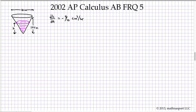We have here a related rates free response question. In fact, all three sections of this problem are related rates, and to my knowledge this is the only such free response question the College Board has put out in recent years where all three sections are related rates. A couple of things to keep in mind at the outset: it's important to understand formulas for volume and surface area of the various parts involved. The key formula is that the volume of a cone is one-third pi r squared h.